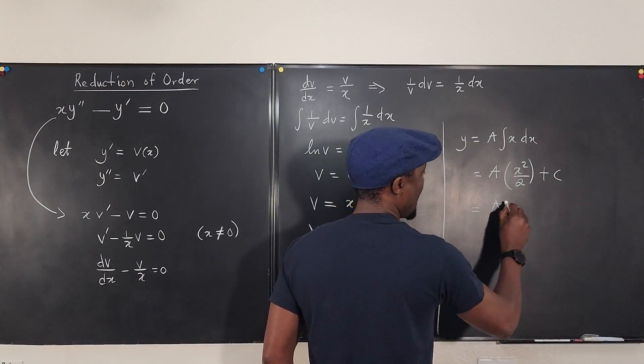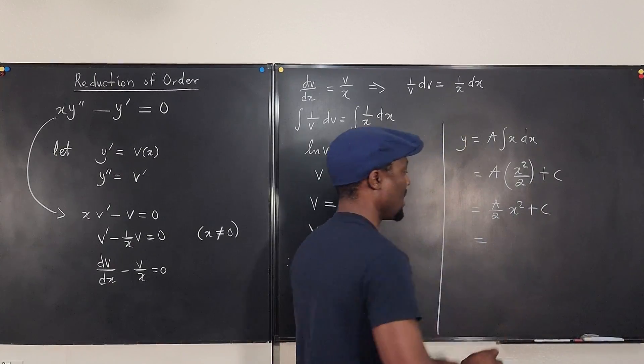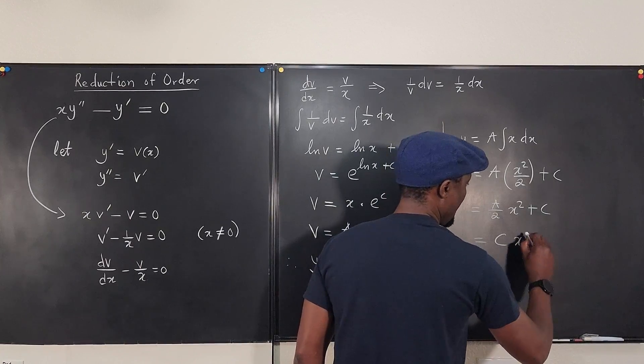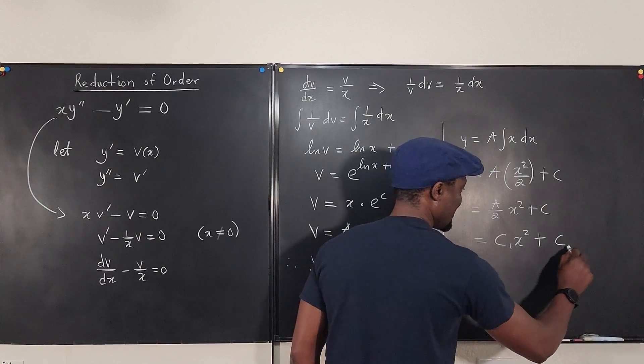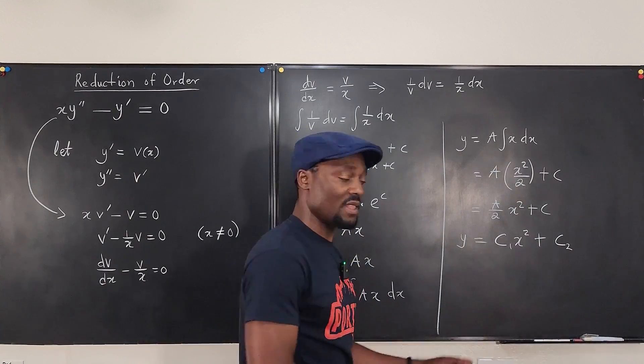Well, we can write this as a over 2 x squared plus c. Well, a over 2 is another constant. Let's call it c. Oh, there are two constants. That's the y we're looking for. And that's our answer.